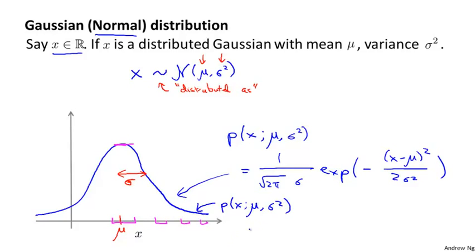Sometimes it's easier to think in terms of sigma squared, which is called the variance. And sometimes it's easier to think in terms of sigma, which is called the standard deviation. Sigma specifies the width of the Gaussian probability density, while sigma squared — the square of sigma — is the variance.